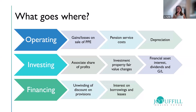Investing items include investment properties, since they are not core to the main business activity, so they go in the investing section. Associate share of profits in group accounts are also investing because you've invested in another company. Financial assets — where any interest, dividend income or gains and losses arise — are also classified as investing.